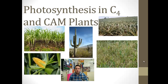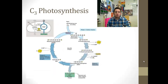Here we go. We're going to finish up our photosynthesis unit with this screencast on C4 and CAM plants. We're talking about an evolutionary step that plants have taken in order to combat dry and arid conditions, and how to still be efficient at photosynthesis when it's dry and when they have to close their stomata in order to prevent drying out. Let's look at some of the different evolutionary steps that plants have taken.